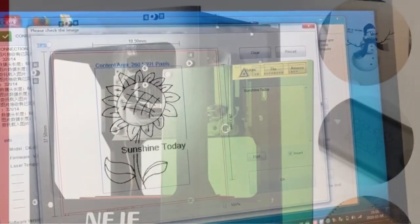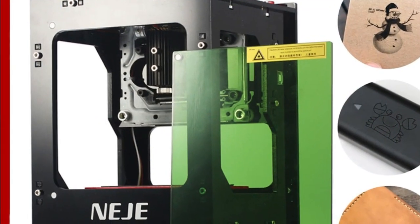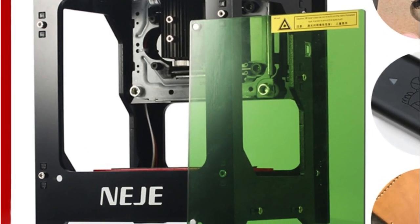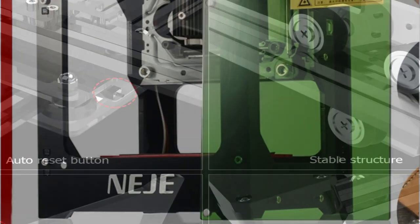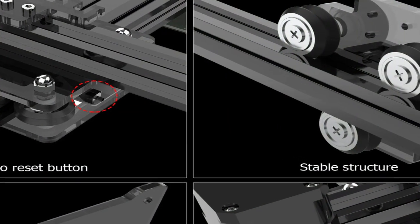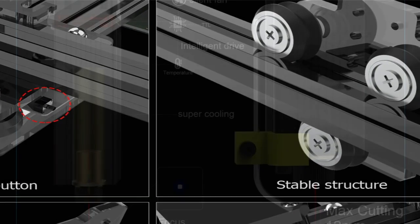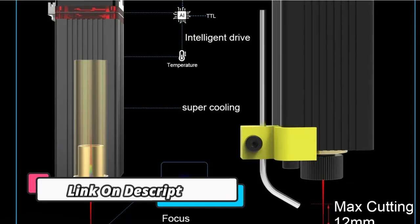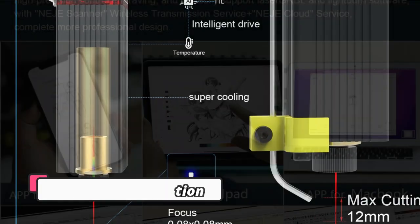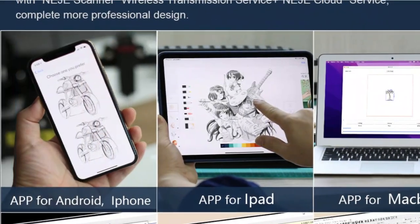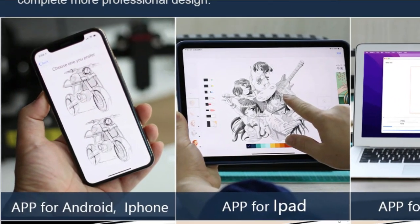The Neige 3 Laser Engraver is a powerful machine that can engrave anything from wood to metal. This machine is perfect for the hobbyist and the professional alike, as it is easy to use and has a multitude of features. With the Lightburn software, users are able to adjust the laser speed and power quickly and easily.